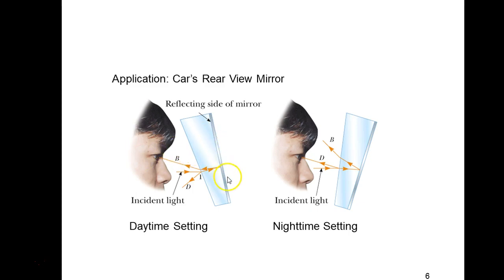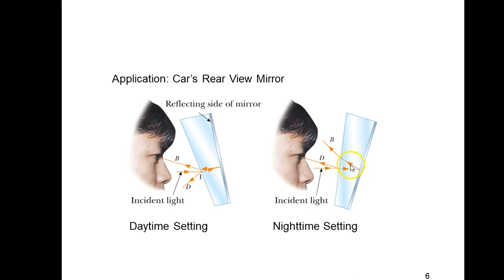The solution is simple: tilt the mirror up using the little tab. Now tracing that horizontal ray, you get a little bit of reflection from the glass surface into your eye — enough to see that there are headlights behind you — but the vast majority of that headlight light refracts through the glass, reflects off the back metalized surface, then refracts away from the surface normal and hits the ceiling of your car. It's a really ingenious and simple solution.